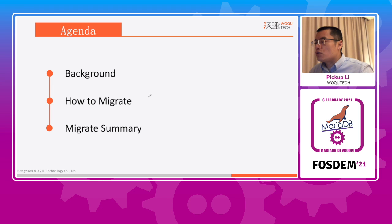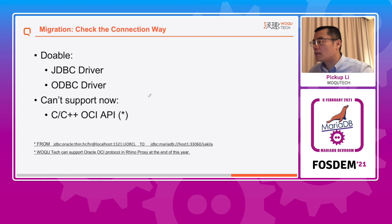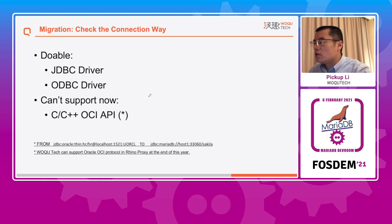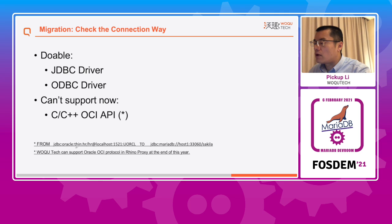Let me introduce in detail how we help customers migrate from Oracle step by step, ensuring no application changes. The first problem we faced when we took over this project: how does the application connect to MariaDB without modifying the code? We investigated the customer's application — it is written in Java and uses JDBC to connect to Oracle. So it is doable. We only need to change the connection string from the Oracle string to the MariaDB string. After we start the application, it will call the MariaDB driver to connect to the MariaDB database.